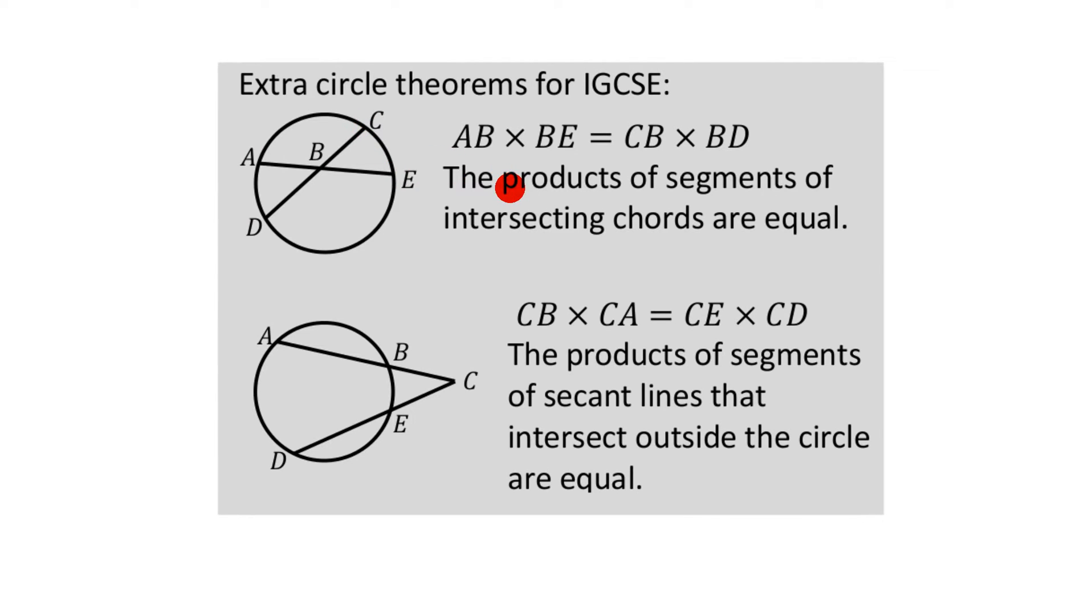I could get really fancy and use the description, which you should really memorize. Memorize, but understand first, because it makes it very easy to memorize. The products, we talked about that, the products when you multiply stuff, of segments, the bits of the chords, of intersecting chords, by the way, so they intersect, they meet at B in this case, are equal.